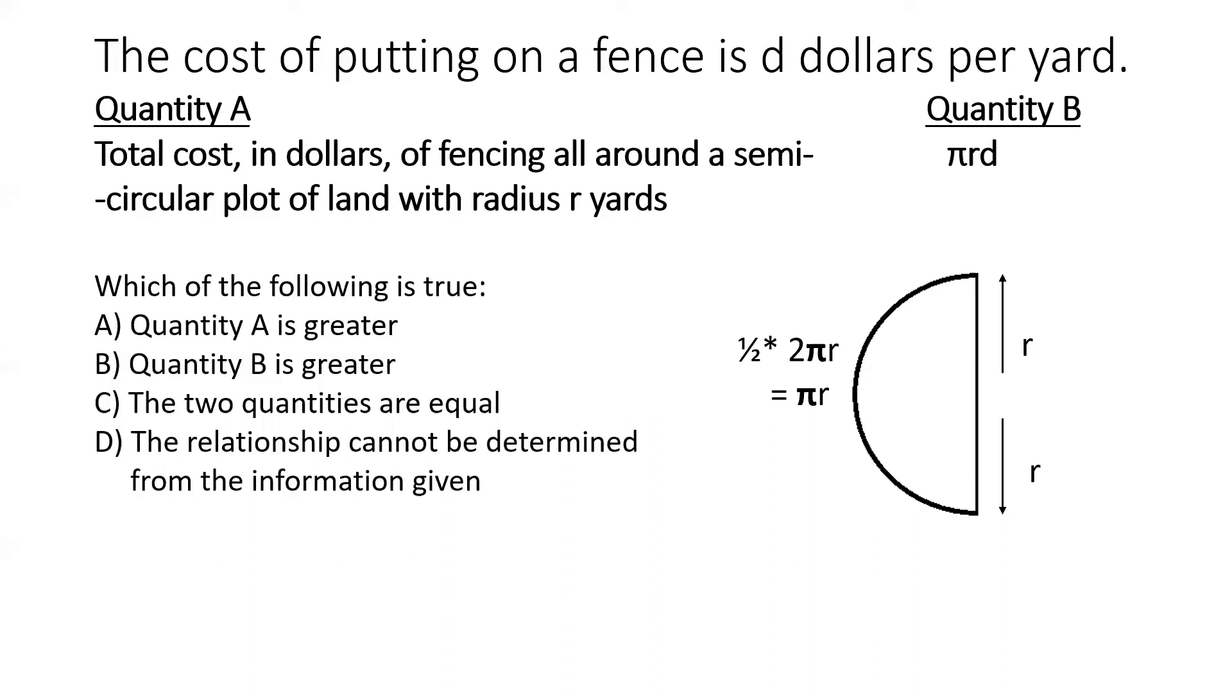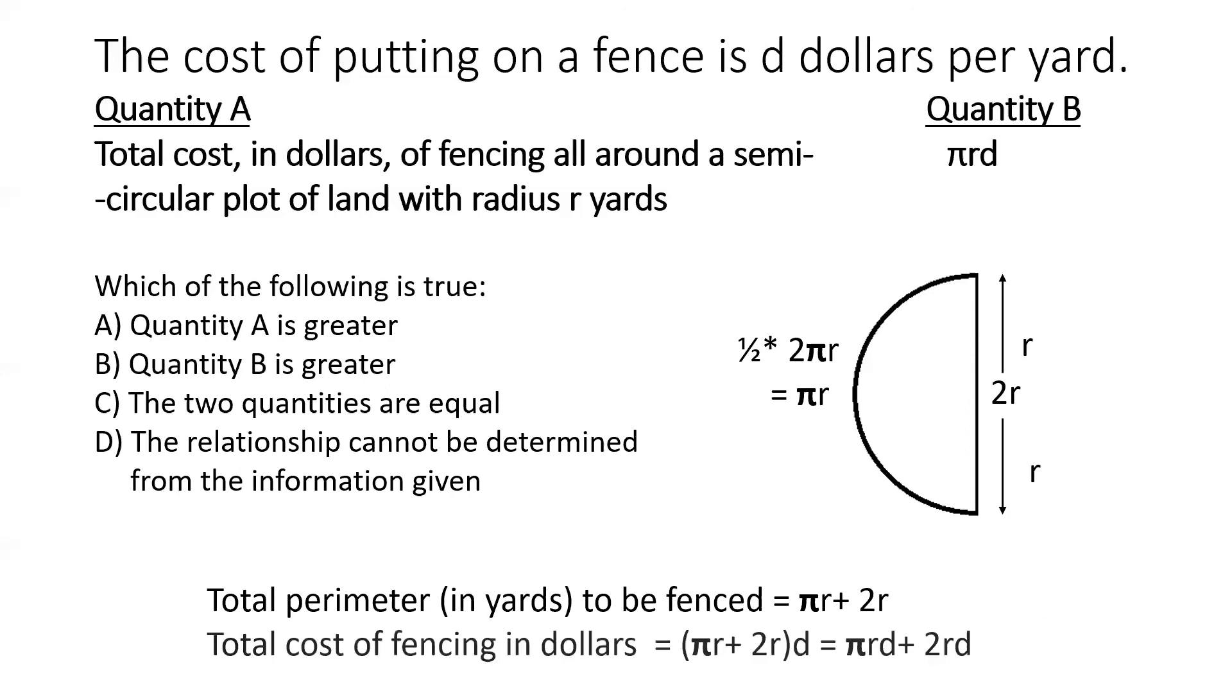But now we are talking about fencing all around the semicircular plot. So we are not just fencing the curved portion, but we would also have to fence along the diameter of the semicircle. So that provides the total perimeter in yards to be fenced as pi R plus 2R. And then if you multiply this with the cost per yard, this is the total cost of fencing in dollars. So it's pi R plus 2R multiplied by D. And that comes out as pi R D plus 2R D.